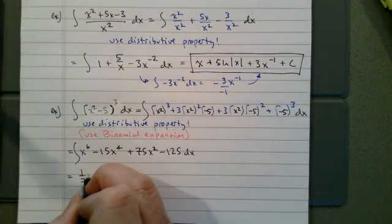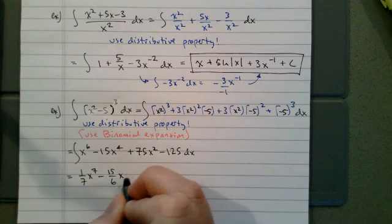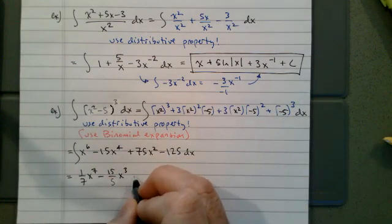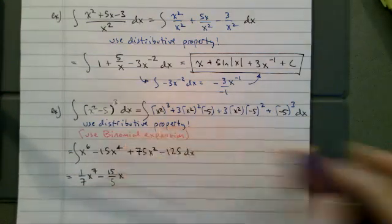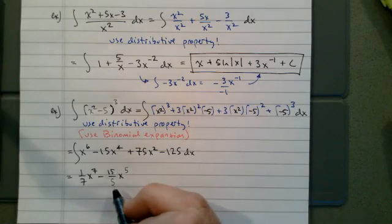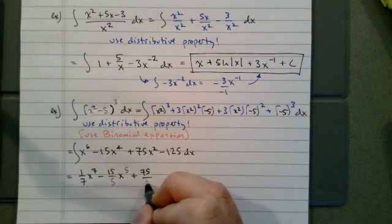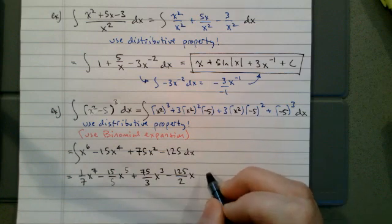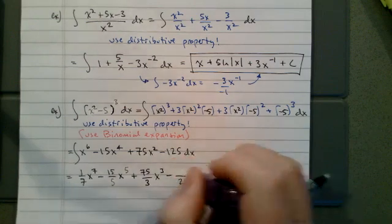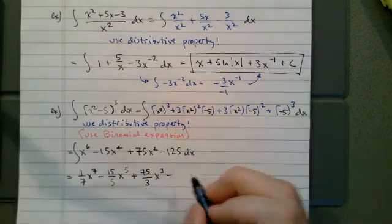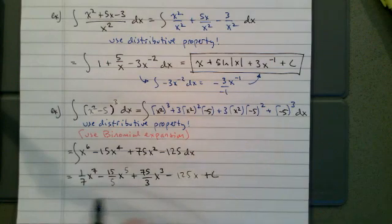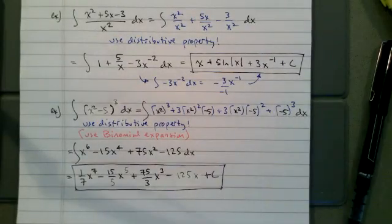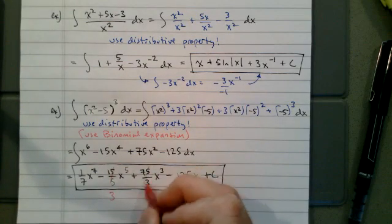So we get 1/7 x to the seventh, minus 15/5 x to the fifth — that's minus 3x to the fifth — plus 75/3 x to the third, minus 125x, plus c. This looks a bit messy, so I'll simplify: 15 over 5 is 3, and 75 over 3 is 25.